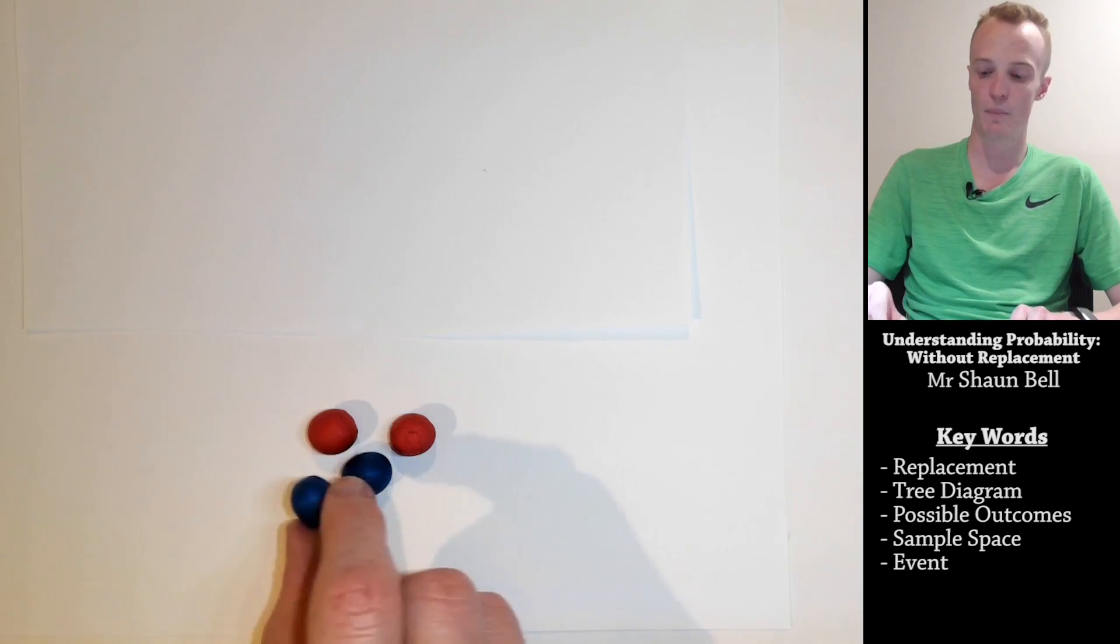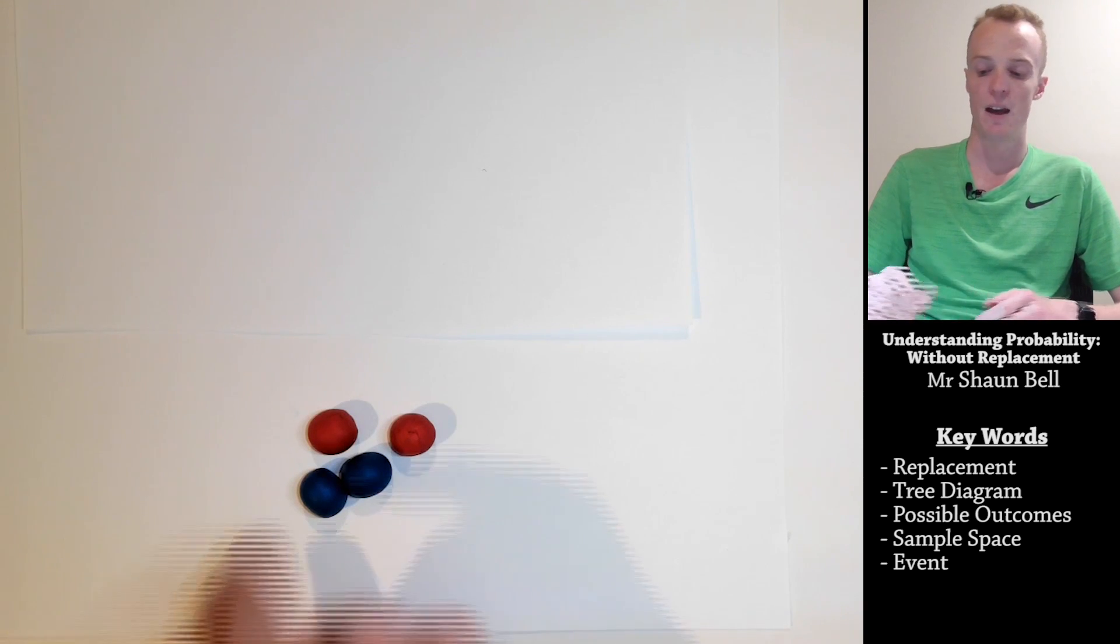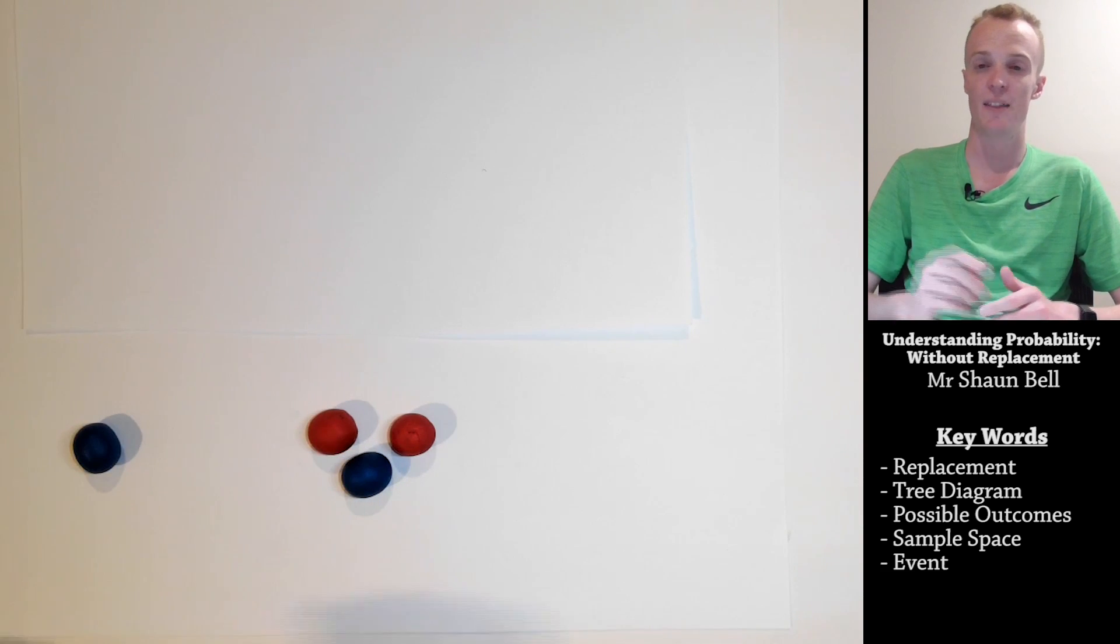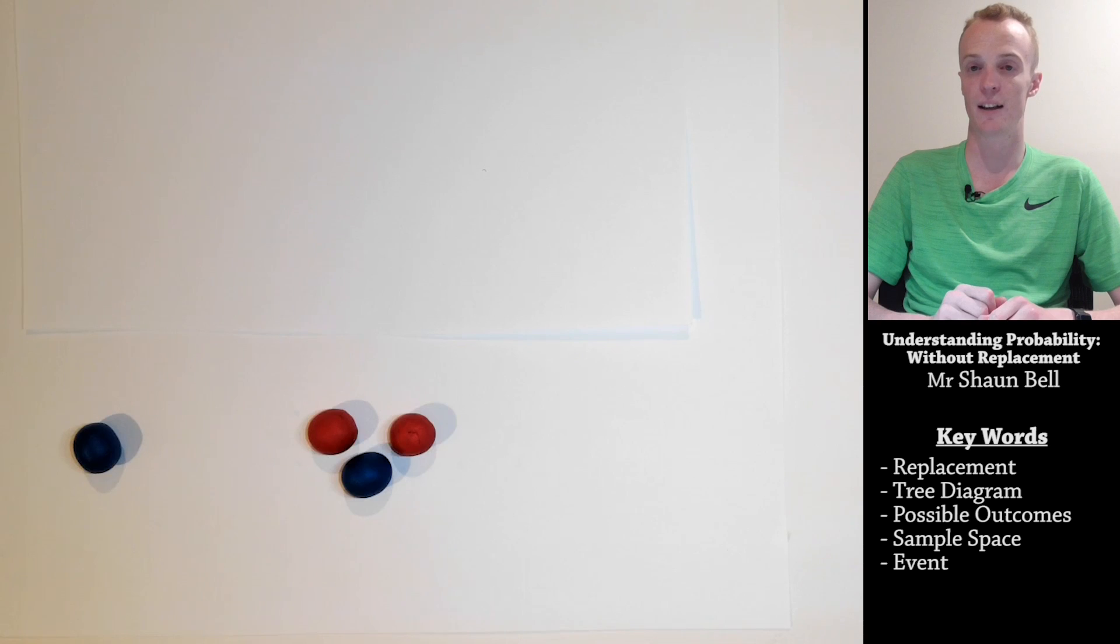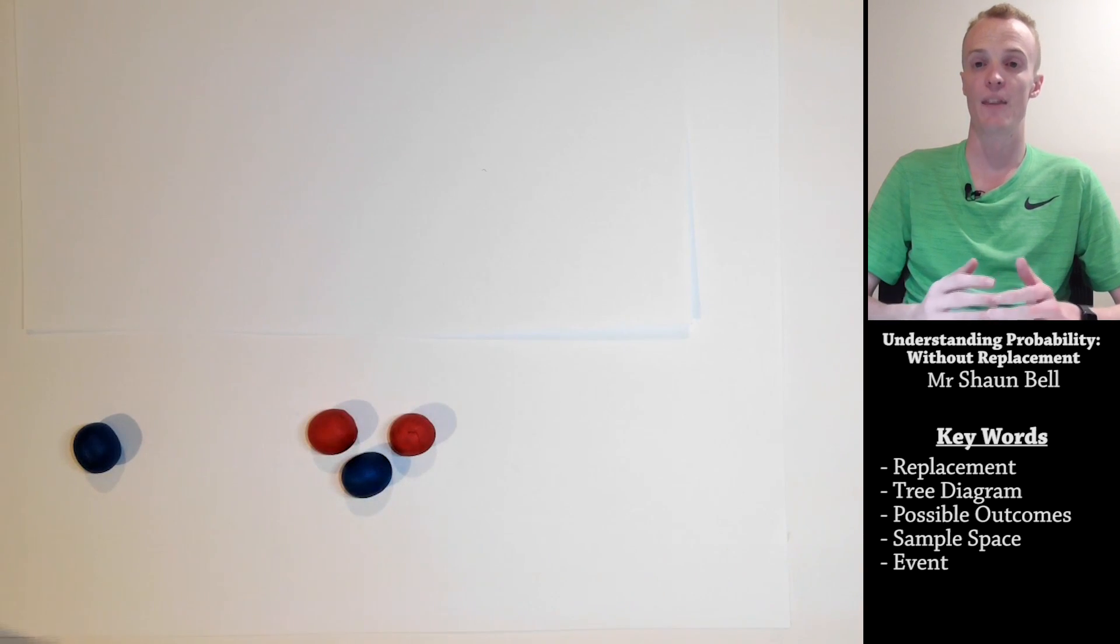If I was to then replace this back into the pool of selection before I randomly selected another coloured ball, we would consider that to be probability with replacement. However, if I first made that selection of the blue ball and then I made a second random selection, the selection pool has changed and that we call probability without replacement.